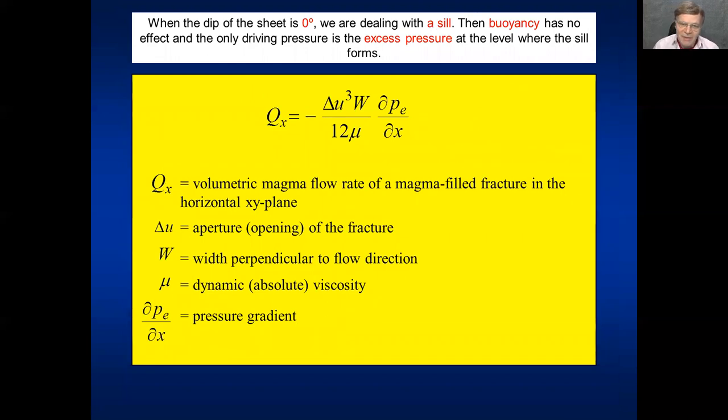Finally, I decided to mention what happens when the intrusion, the sheet intrusion is horizontal. Well, then we are dealing with a sill. And then buoyancy does not come into play. There is no buoyancy factor there because the flow is horizontal. Buoyancy comes into play only when the flow is going from a deeper part in the crust to a higher part in the crust or towards the surface, whereas here the flow is horizontal. So no buoyancy. Again, Q is the volumetric flow rate and all the other things have been defined as before. And then we are dealing with an excess pressure. But the excess pressure in a sill is, of course, if it's fed by a dike, is the overpressure that was in the dike when it changed or became deflected into a sill. We will discuss these things later in the course and in the webinars as far as we have time to do.